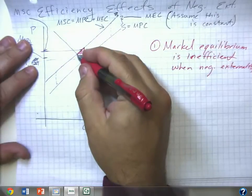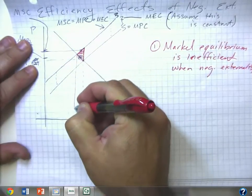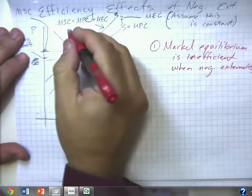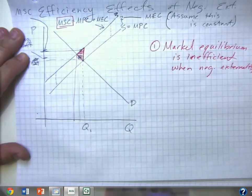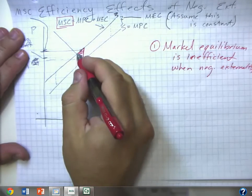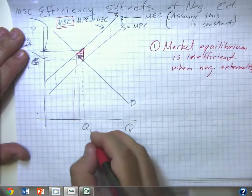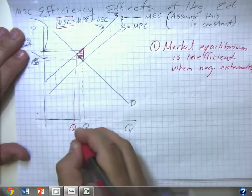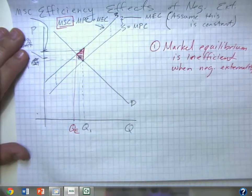And in particular, the efficient quantity is where this marginal social cost line crosses the demand curve. So we'll call that Q1 and we'll call this QE, the efficient quantity.